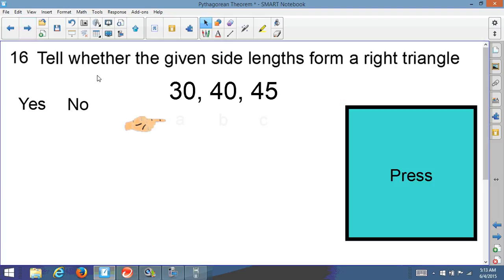Here's an interesting question. Tell whether the given side lengths form a right triangle. Yes or no? Well, we have 30, 40, and 45. If I remember correctly, earlier in the video I said the longest side is the hypotenuse, the C side. So the 45 would be the C, and the other two would be the legs. So, if it's a right triangle, the Pythagorean theorem will apply in this case. So I'd have to see if a squared plus b squared is equal to c squared.